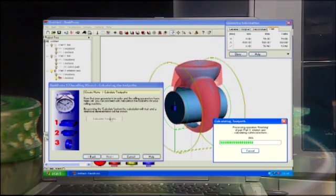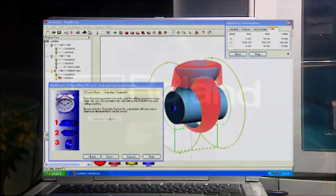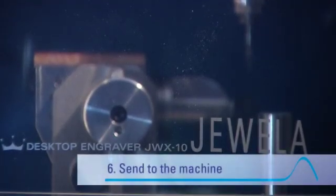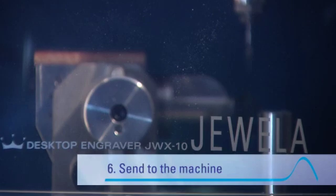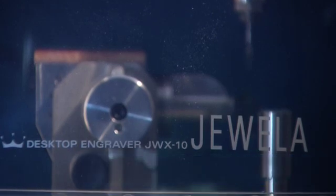Optionally, you can add roughing operations. The Roland JWX10 machine makes the whole operation very simple, as it can be started by sending the toolpaths directly from DeskProto.